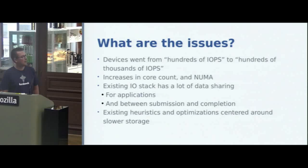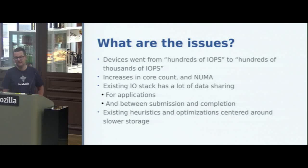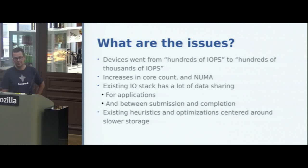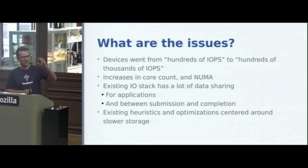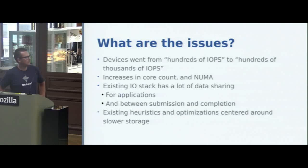To make things even worse, this coincided with processor manufacturers starting to give up on the megahertz race and instead throwing more cores at the issue. That means any sort of contention you have in the stack just becomes much, much worse. Not only that, two-socket systems became popular — we see systems running four and eight sockets and so forth. The existing I/O stack has a lot of data sharing going on. When you talk to a block device, there are certain elements of the stack that all applications accessing the device end up using, as well as sharing between submission and completion events.